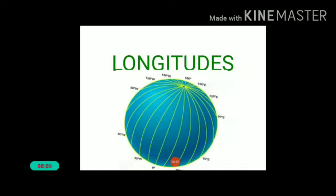Let us recap our class. Today we learned about longitudes. All the imaginary circles perpendicular to the equator are called meridians of longitudes, and degrees are measured in degrees of longitudes. The prime meridian is zero degrees longitude. There are a total of 360 degree longitude lines. The prime meridian divides the Earth into two equal halves — the eastern hemisphere and the western hemisphere. Degrees are divided into minutes and minutes into seconds. Grid means the network of parallels of latitudes and longitudes, which helps us find locations.